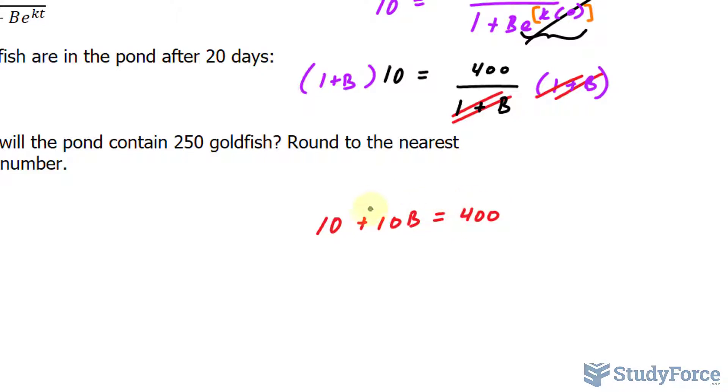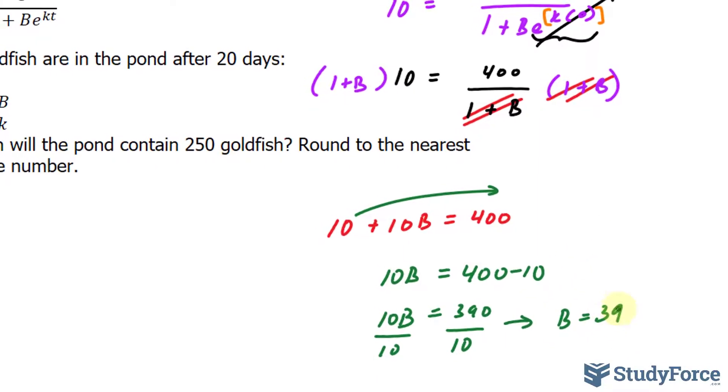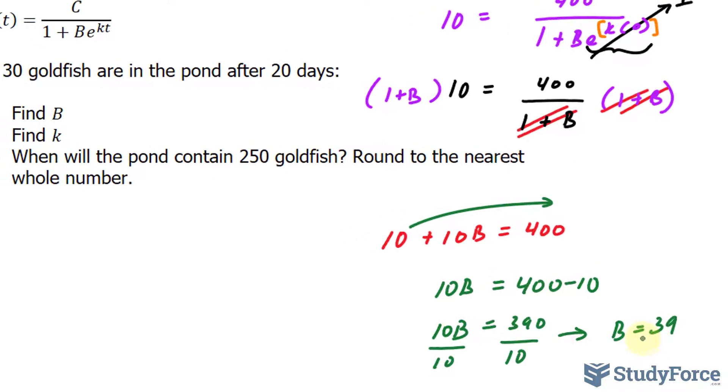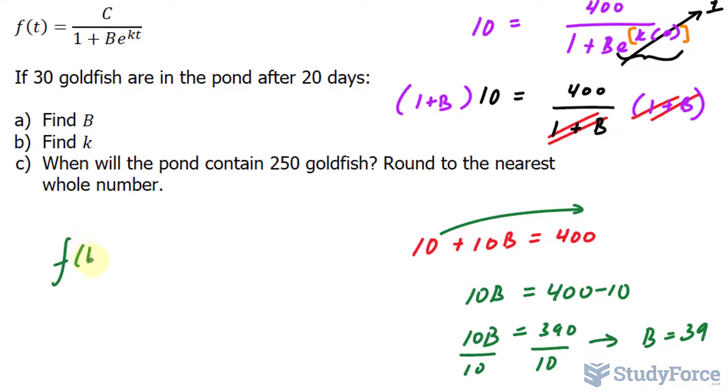Then we solve for B. Bring that over, 400 minus 10, that's 390, and then we divide both sides. So B, our constant, happens to be 39. I can start to substitute that now back into my function. My function now looks like this after completing question a.